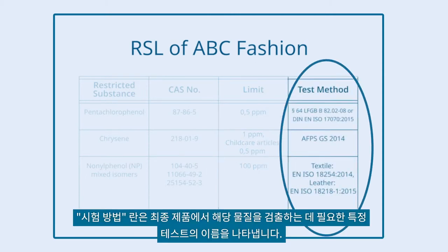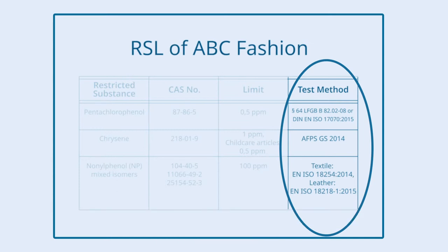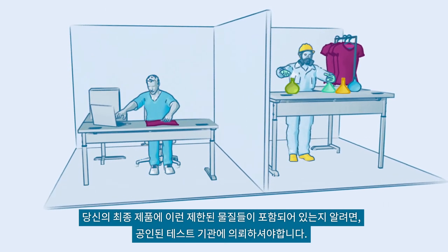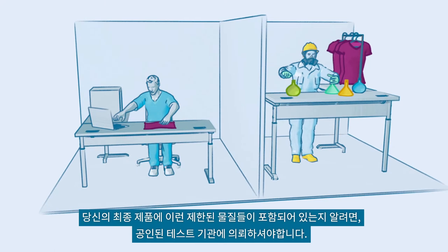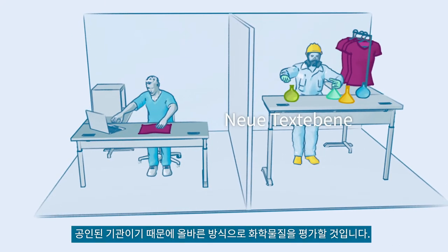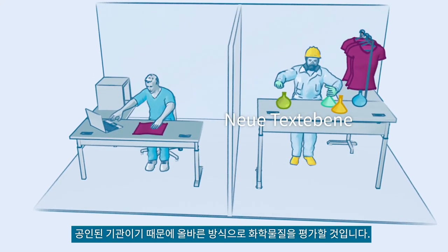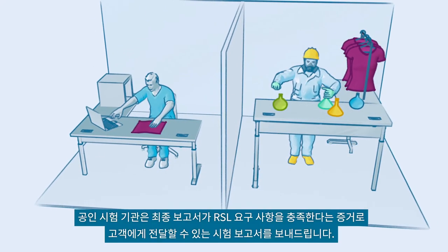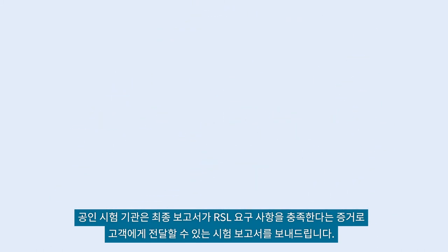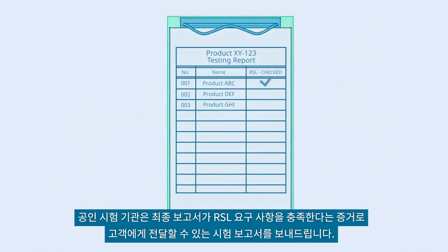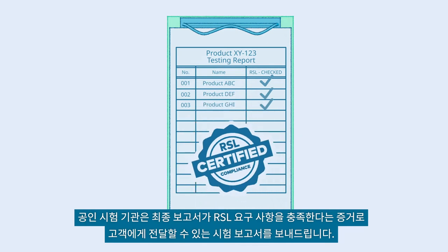The Test Method column indicates the specific laboratory test required for detecting that substance in the end product. To detect whether there are restricted substances in your final products, you will need to collaborate with a certified testing laboratory qualified to test the finished product with the correct test methods. The certified testing laboratory will send you a test report, which you can forward to your customer as proof that your end products fulfill the RSL requirements.